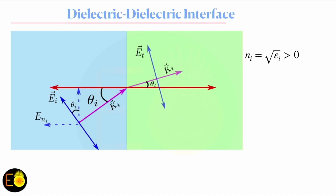The electromagnetic wave is incident from the first medium and enters the second medium making an angle theta_i with the surface normal. The propagation wave vector is ki, the electric field is perpendicular to the propagation vector, and the magnetic field is perpendicular to both. Using the right-hand rule — place your fingers along the electric field and curl them towards the magnetic field — your thumb indicates the propagation direction. This gives a magnetic field directed towards us.